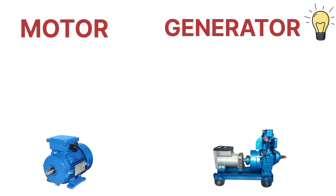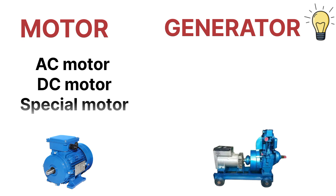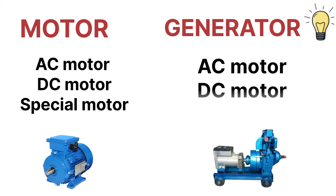Now let's talk about the types of motors and generators. There are three types of motors: the first is the AC motor, the second is the DC motor, and the third is a special type of motor. Generators are categorized into two types: AC and DC.